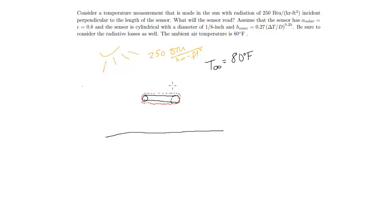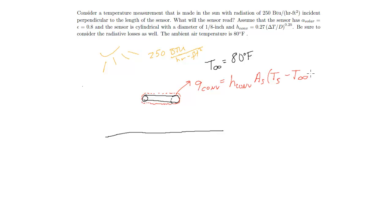The easiest component is that we're going to lose some heat to convection. Convection depends on the convection coefficient, the total area of the sensor, and the temperature difference — the sensor temperature minus the ambient. We're assuming the sensor is hotter than the ambient air. This gives us heat in BTU per hour. Everything we're doing here is in power.